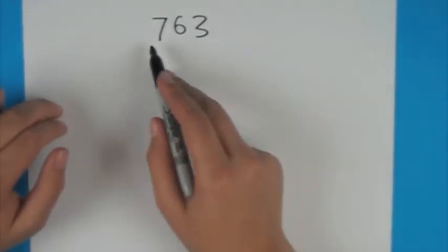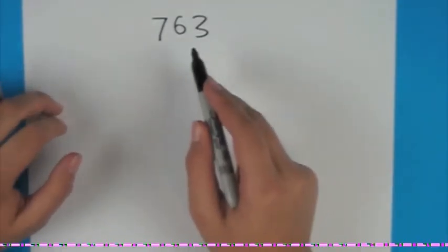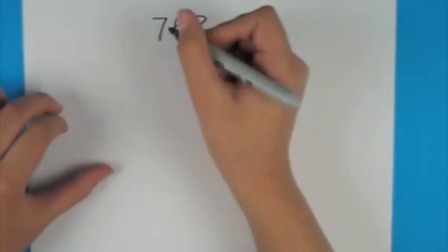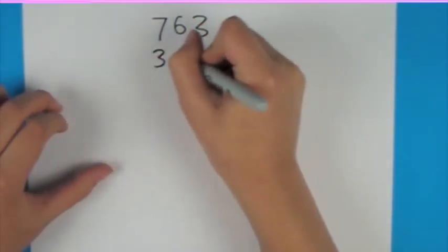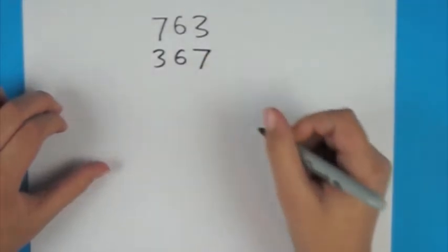Now, we're going to reverse the digits. So instead of 763, we'll do 367. Write that down. Like that.